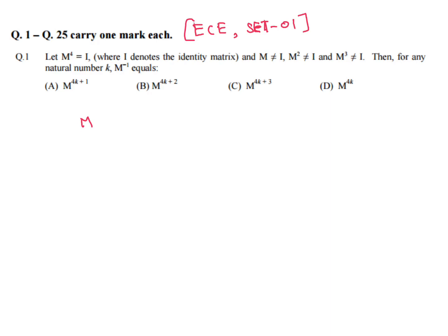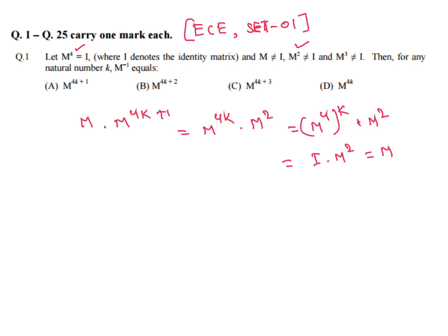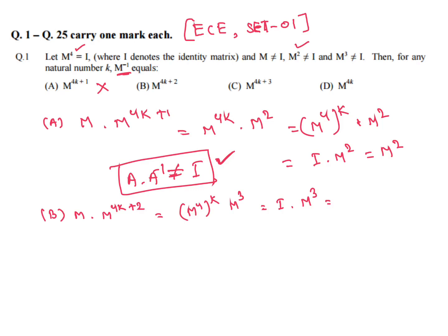For option A: M into M to the power 4k+1 equals M to the power 4k into M². Now M² is not equal to I, and M to the power 4k equals I (since M⁴=I), so I into M² equals M². Therefore A is not possible — A into A inverse is not equal to I.